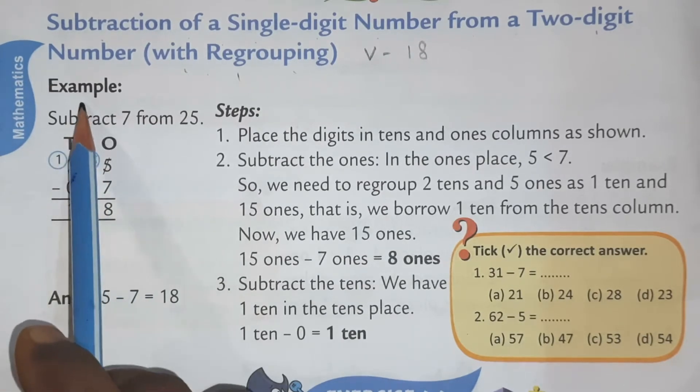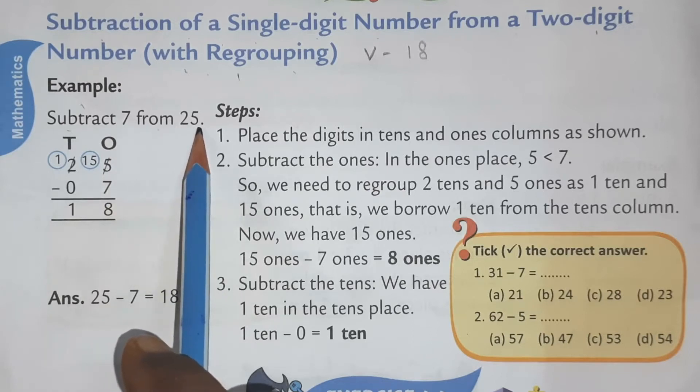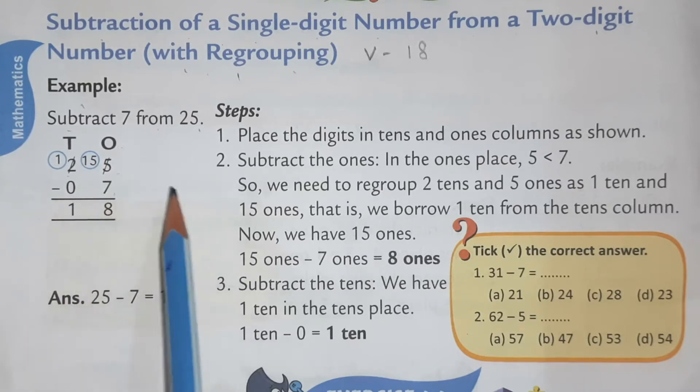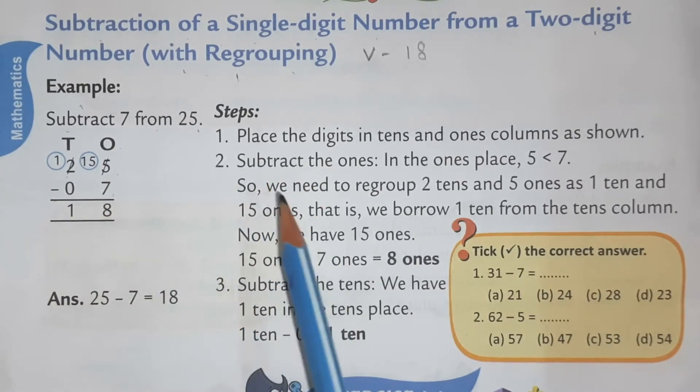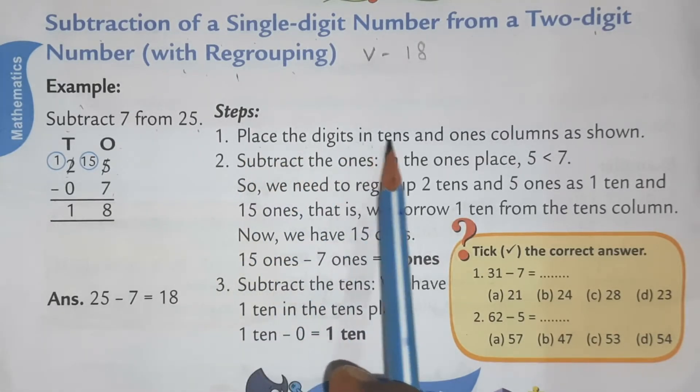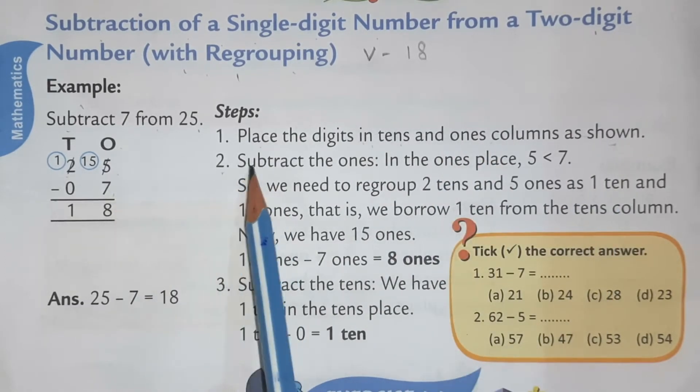So just have a look at this example, subtract 7 from 25. So 10s, 1s, 25 we are written minus 0, 7, 18. Like this we have to write now. See how we have to solve this. Place the digit in the 10s and 1s column as shown. Then step 2,